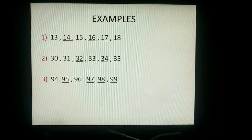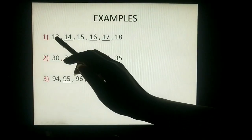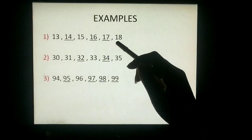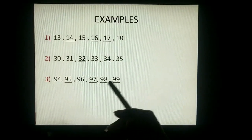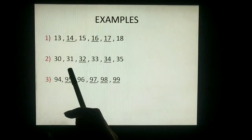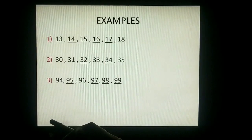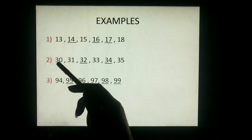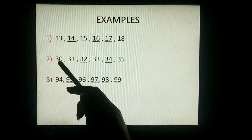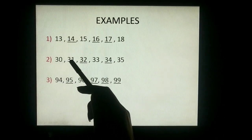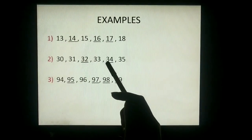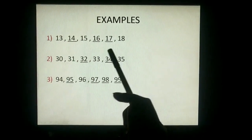This is an example — 13, 14, 15, 16, 17, 18. This is a counting series of numbers. Like we have some fill-in-the-blanks: 30, 31, dash, 33. So counting means 30, 31, 32, 33, 34, 35.